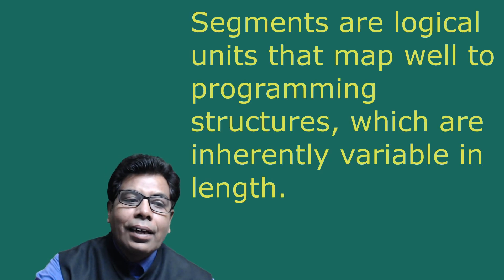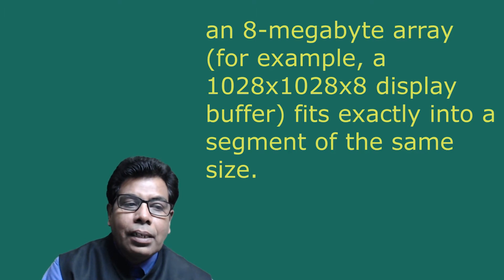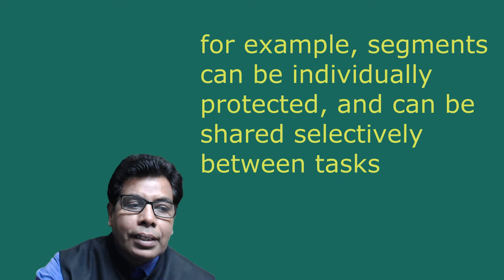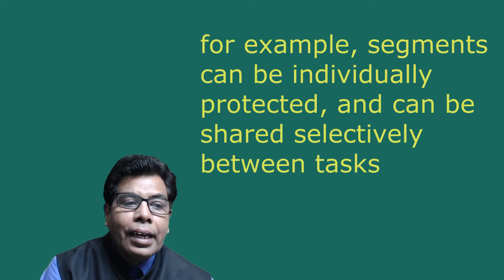As just mentioned, an operating system can define the 80386 logical address space as one or more segments. Segments are logical units that map well to programming structures which are inherently variable in length. For example, a 1516-byte procedure fits exactly into a 1516-byte segment, or an 8-megabyte array. A 1028x1028x8 display buffer fits exactly into a segment of the same size. By providing architectural support for segments, the 80386 improves system performance. For example, segments can be individually protected and can be shared selectively between tasks.